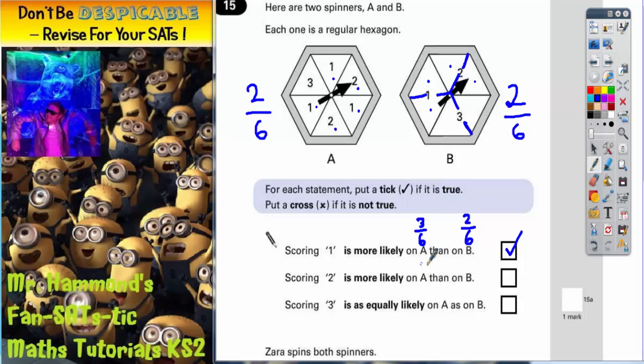So they're both two out of six. Now if they're both two out of six, it can't be more likely on A than B. They're actually equally as likely. So that statement is incorrect because they're equally as likely. It's two out of six on both spinners.